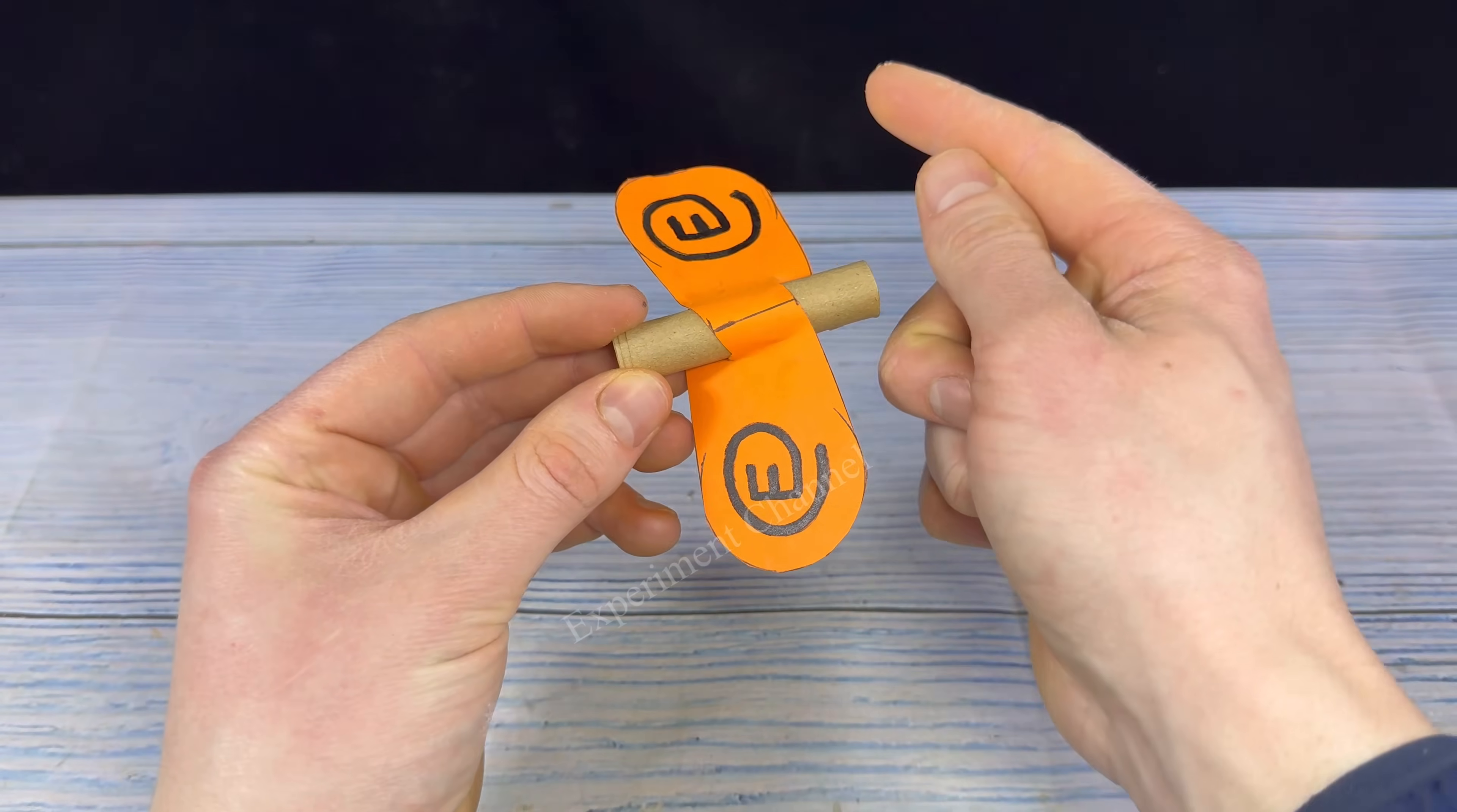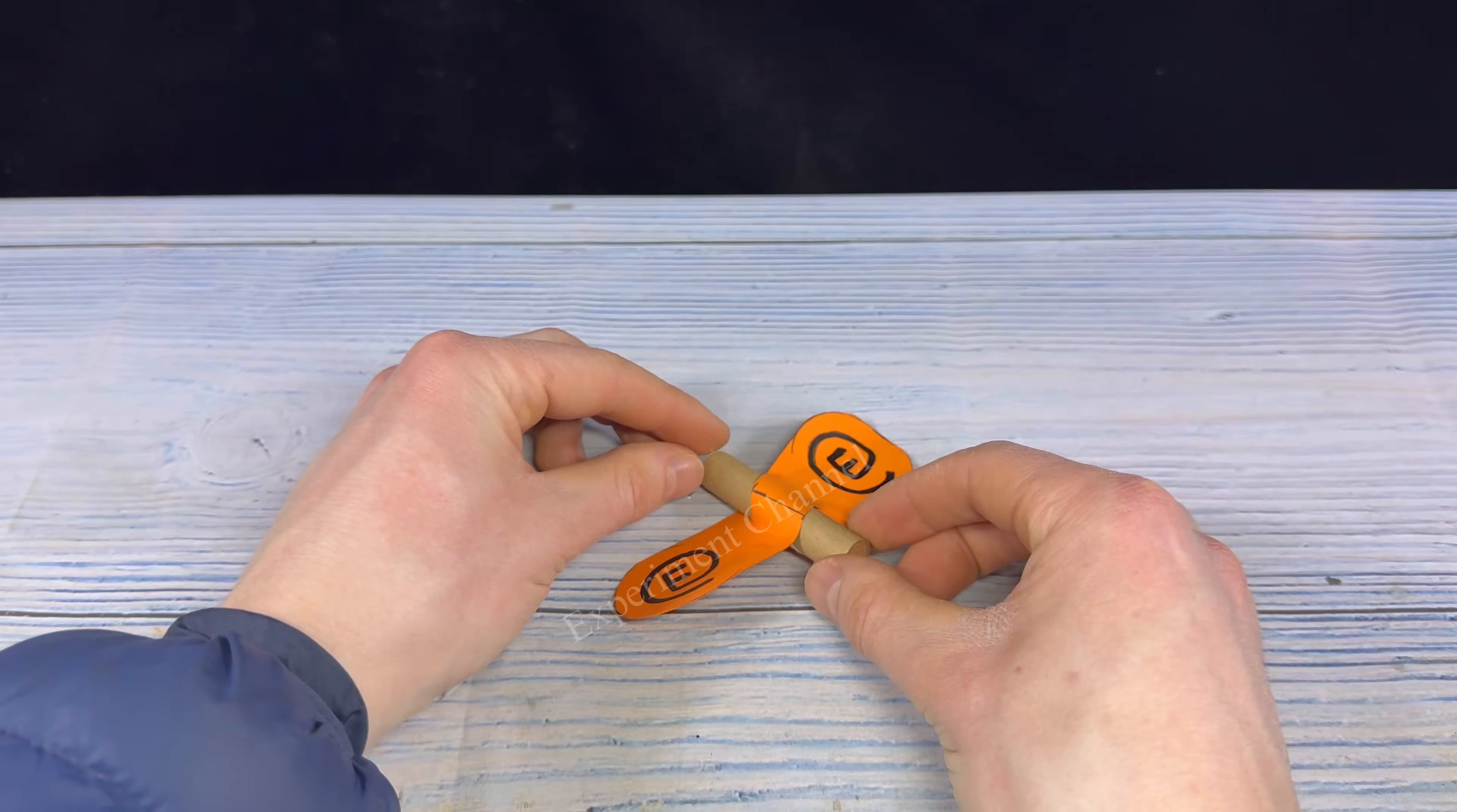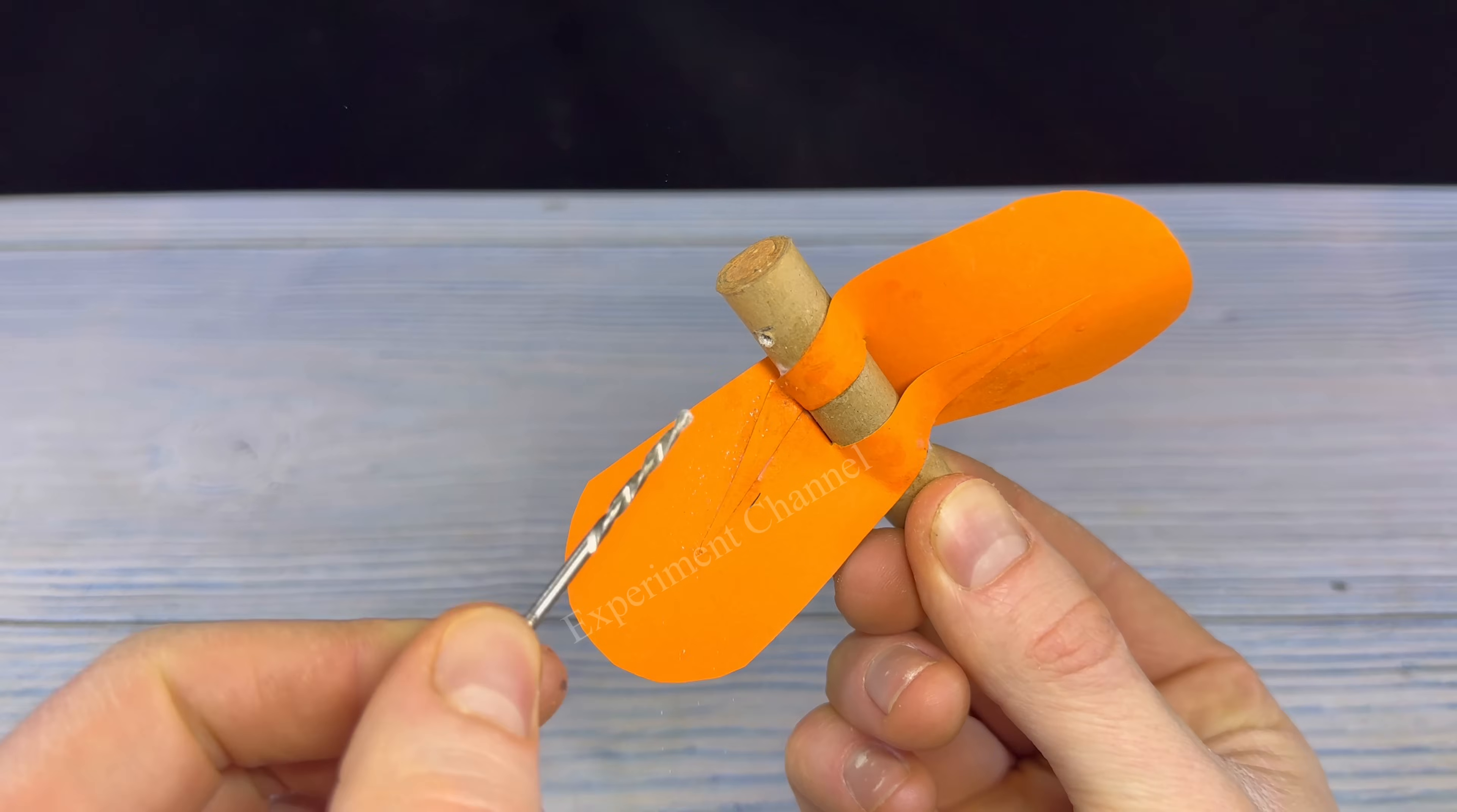Note where the fuse hole is. Make sure the wings are in the leading direction to create lift. Also, you want to make sure that the nozzle is at a 30 to 20 degree angle with the wing.